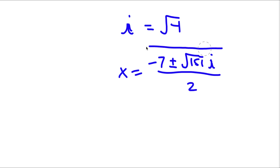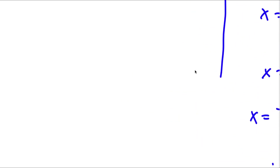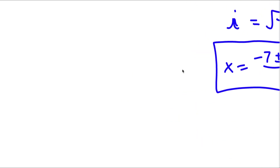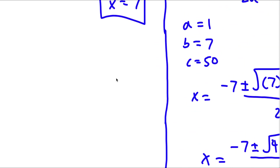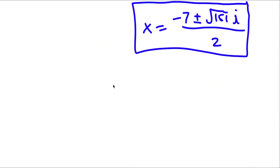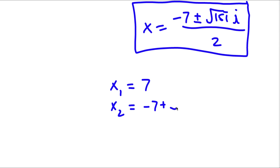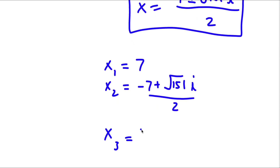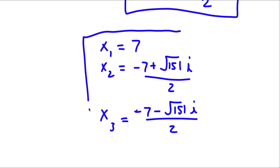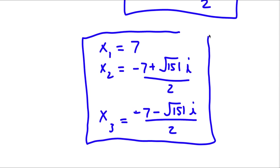So this gives two solutions. My three solutions to this problem are: x equals 7, x equals negative 7 plus the square root of 151 i over 2, and x equals negative 7 minus the square root of 151 i over 2.